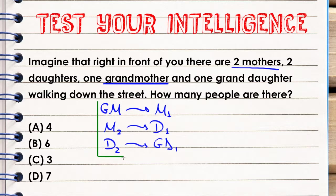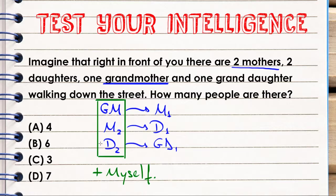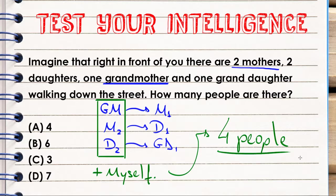Now the interpretation is very important. I will also count myself, because I am watching them walking down the street. So how many people are there? Three women plus myself equals four people. My answer is going to be letter A — four people.